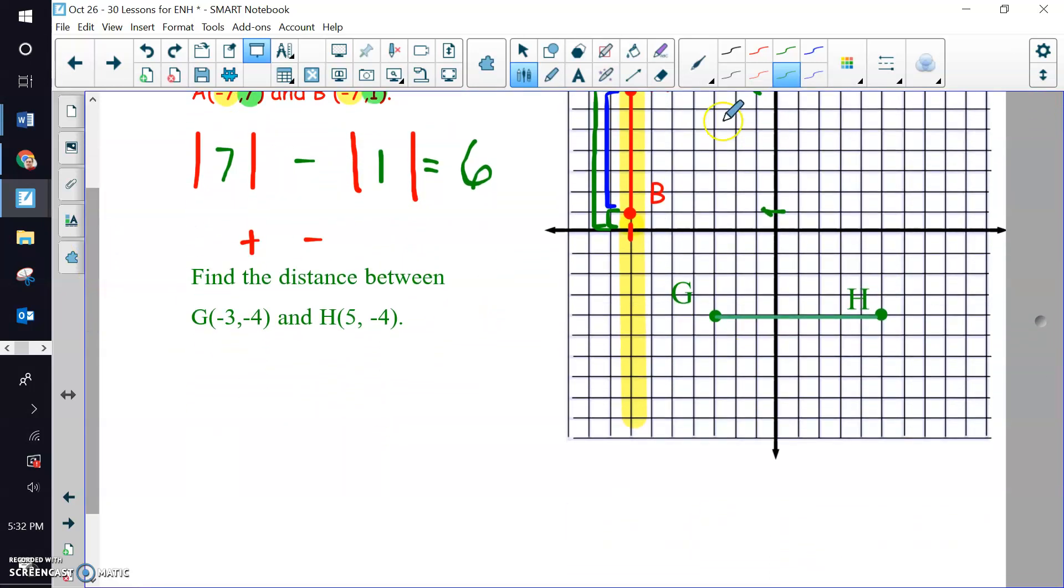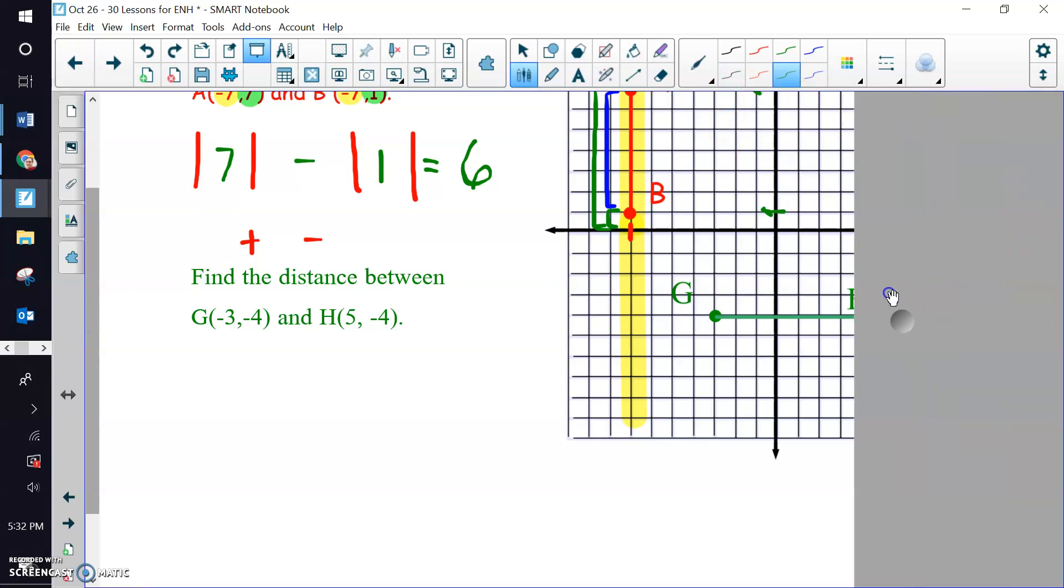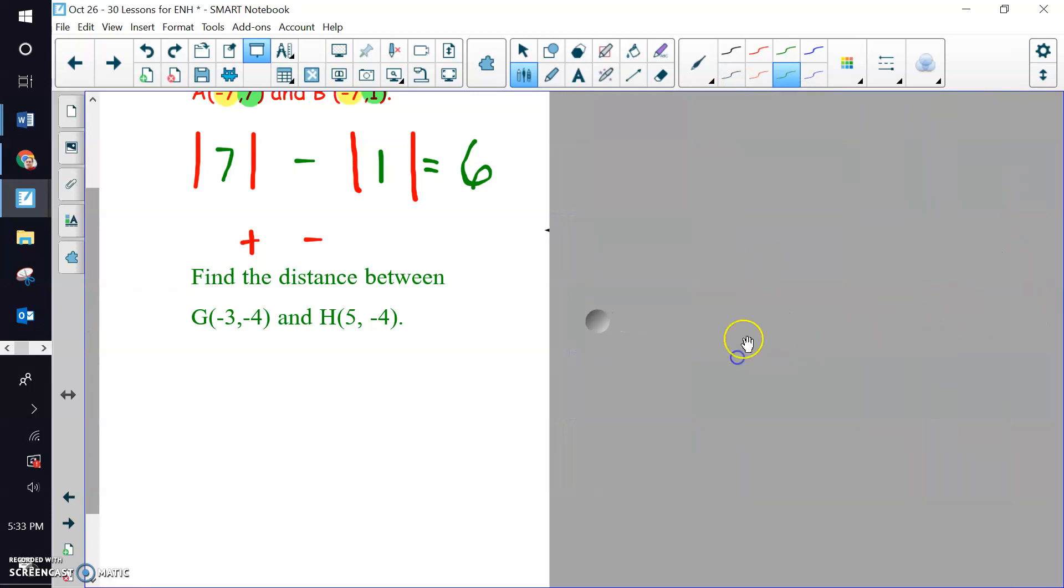Now let's do this one. And this time, let me just kind of cover this up. Let's not look at the coordinate plane. Let's just look at these two points right here. So the x values, we have negative 3 and positive 5. And then the y values are negative 4 and negative 4.